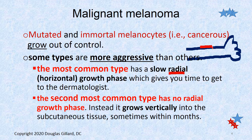After a certain period — maybe eight months, maybe a year and a half, maybe four months — the radial growth phase is over and it grows down. Once it gets into the subcutaneous tissue, the cells can fly off, get into the lymph system, and once you're in the lymph system you're in the blood, and you can spread to any spot in the body. This is called the vertical growth phase.